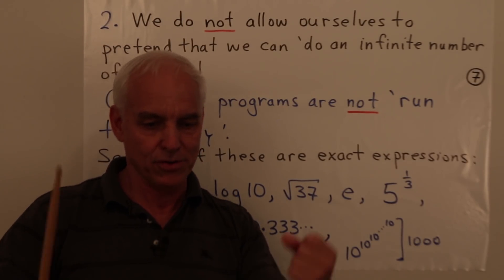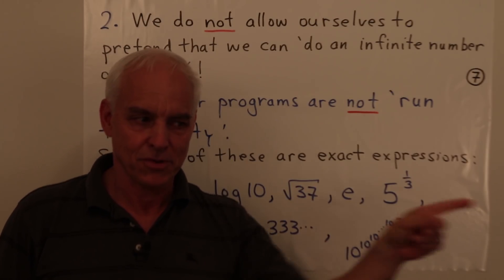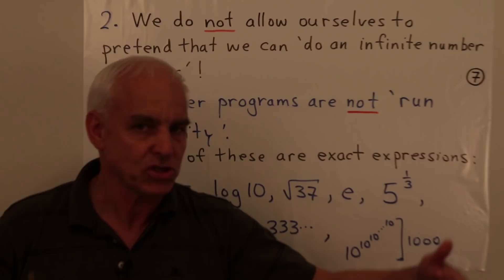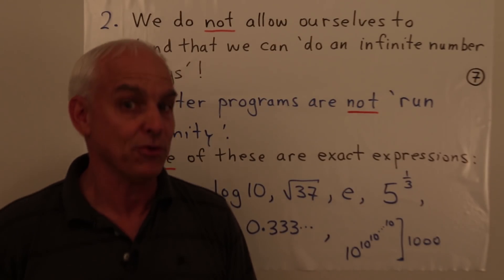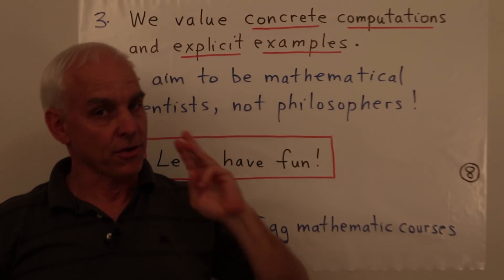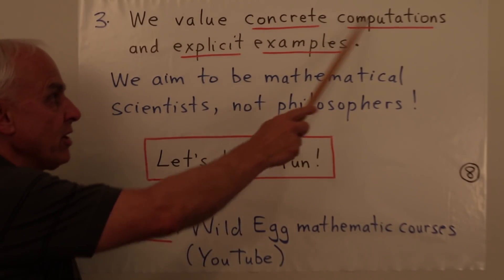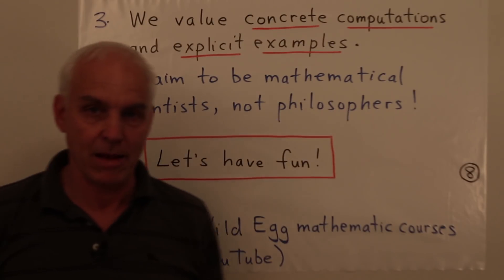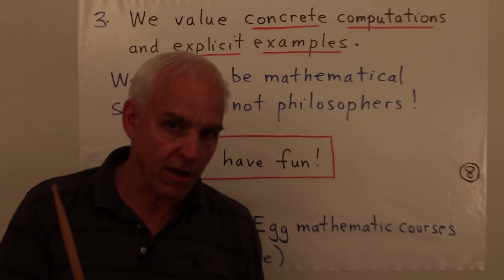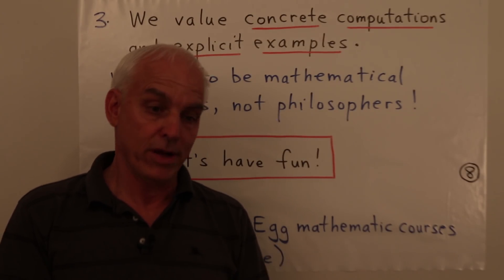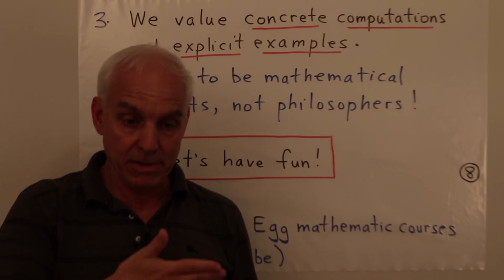Our third general orientation is that we really value concrete computations and explicit examples. These are things that we love and that we aim for, and they're especially important when you're learning a subject to really be able to see explicit examples which are not trivial, which are representative of the theory they're supposedly demonstrating, and also to be able to compute.